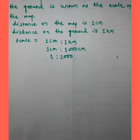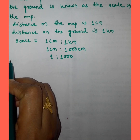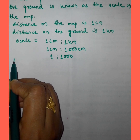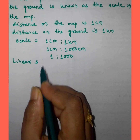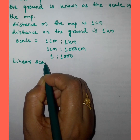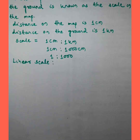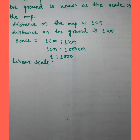Then what is a linear scale? The linear scale is a line which is divided into some equal parts, and each equal part measures the distance between two places.